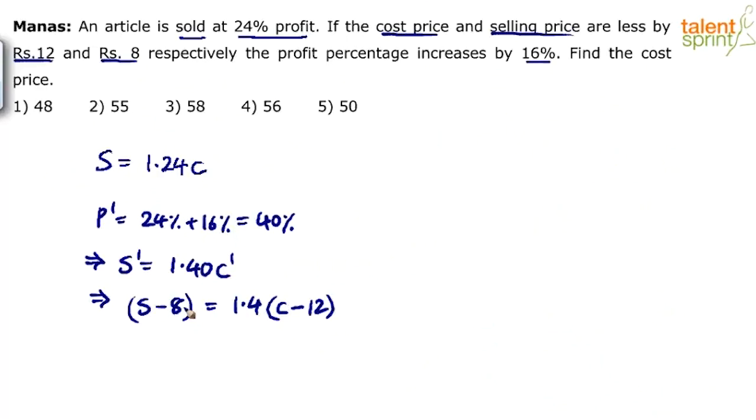That's it. S minus 8 equals to 1.4 into C minus 12, where S is equal to 1.24C. Substitute here. From the first equation S is 1.24C. So overall what do we get? 1.24C minus 8 equals to 1.4 into C is 1.4C minus 1.4 into 12, 16.8.